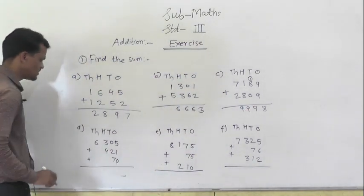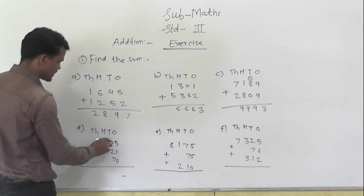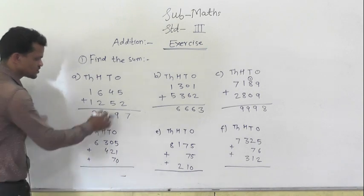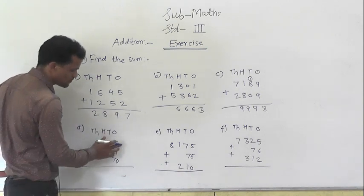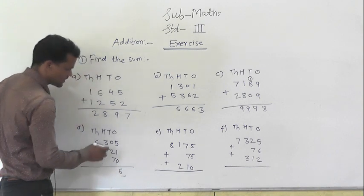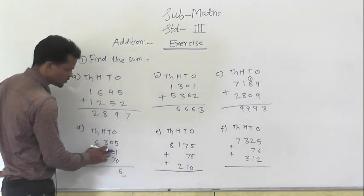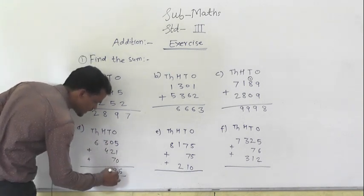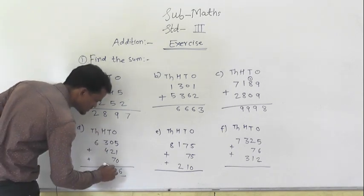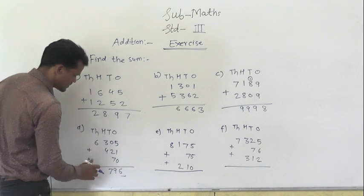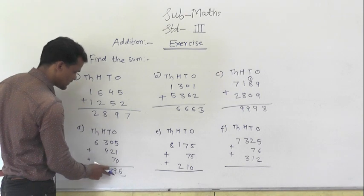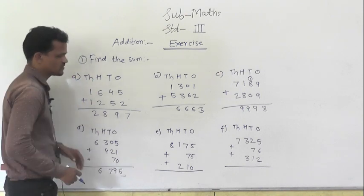Next, D1: 6305 plus 421 plus 70. Add the ones place column: 5 plus 1 is 6, 6 plus 0 is 6. Then 0 plus 2 is 2, 2 plus 7 is 9. Then the hundreds column: 3 plus 4 is 7, and here 6. So read this number: 6796.